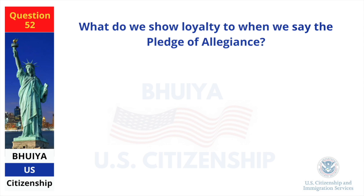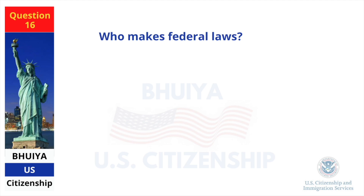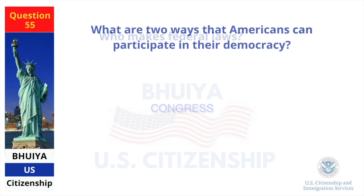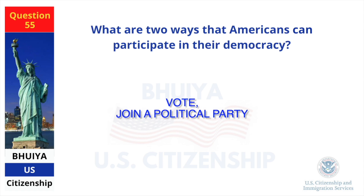What do we show loyalty to when we say the Pledge of Allegiance? The United States. Who makes federal laws? Congress. What are two ways that Americans can participate in their democracy? Join a political party.